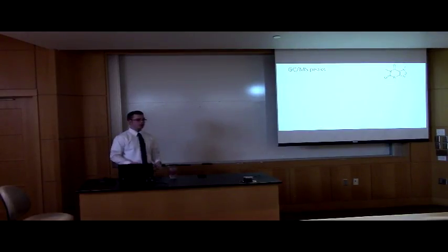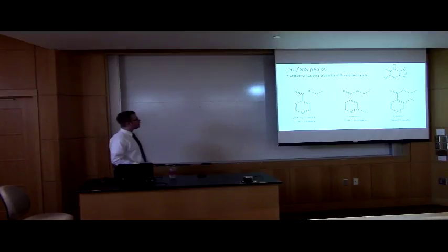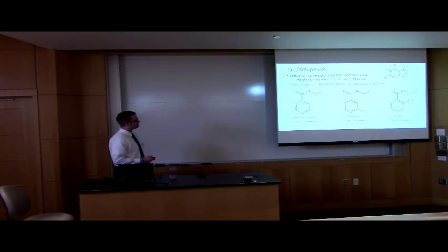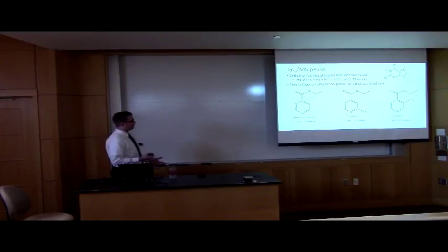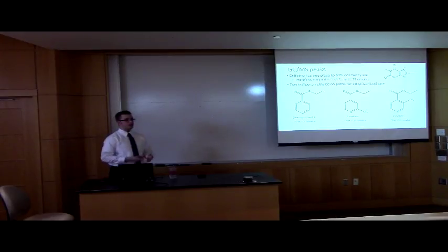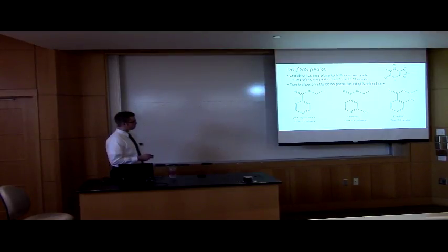I'd like to talk about the GCMS peaks. Caffeine has one place to trifluoromethylate, and therefore there's one peak to look for at about 11.52 minutes — this is the only place to trifluoromethylate. There are two trifluoromethylation paths for ethyl isonicotinate: at the two-position at about 7.35 minutes, and at the three-position at about 7.0 minutes. We also have a starting material peak to look out for at about 7.5 minutes. So we can determine where our trifluoromethyl group might be and whether we got it at all.